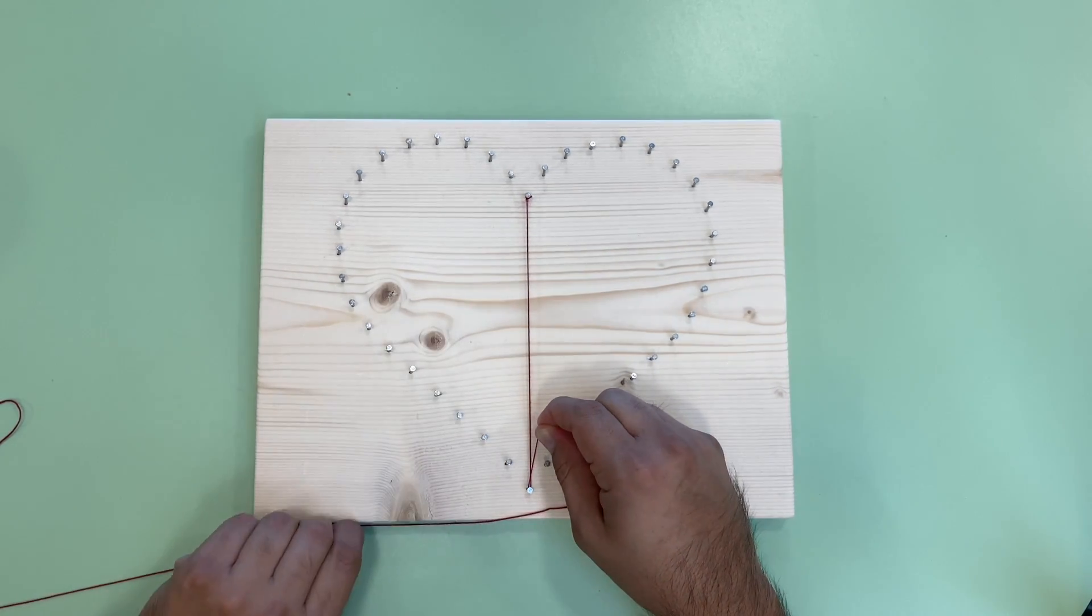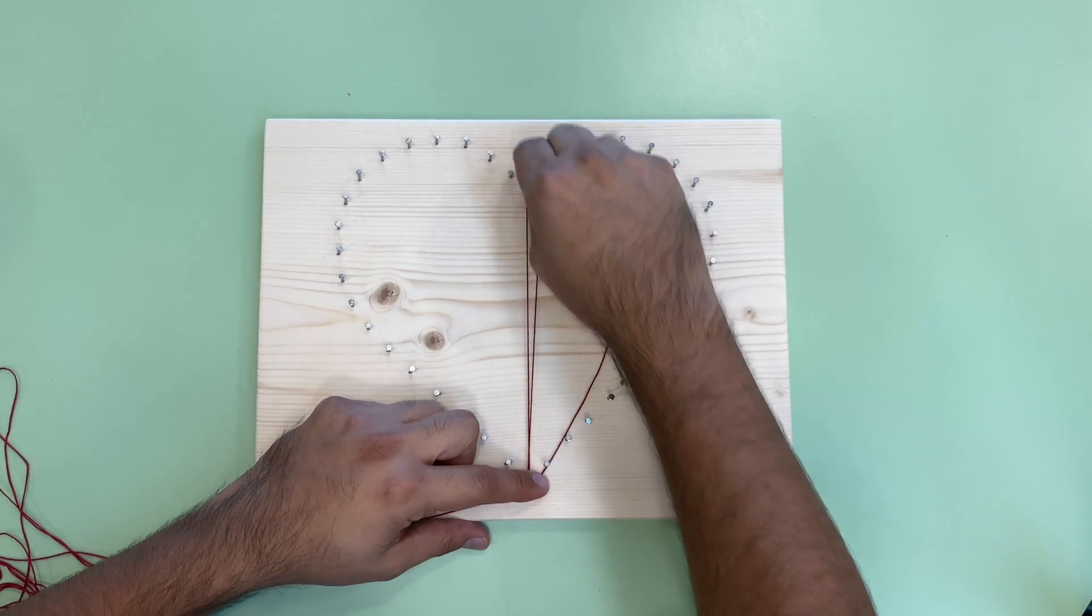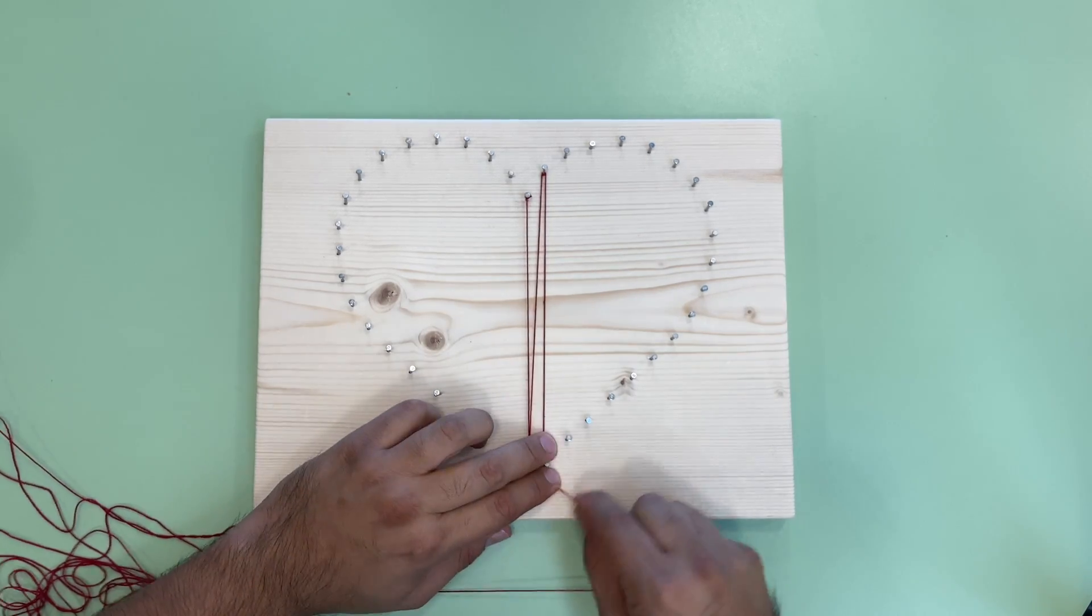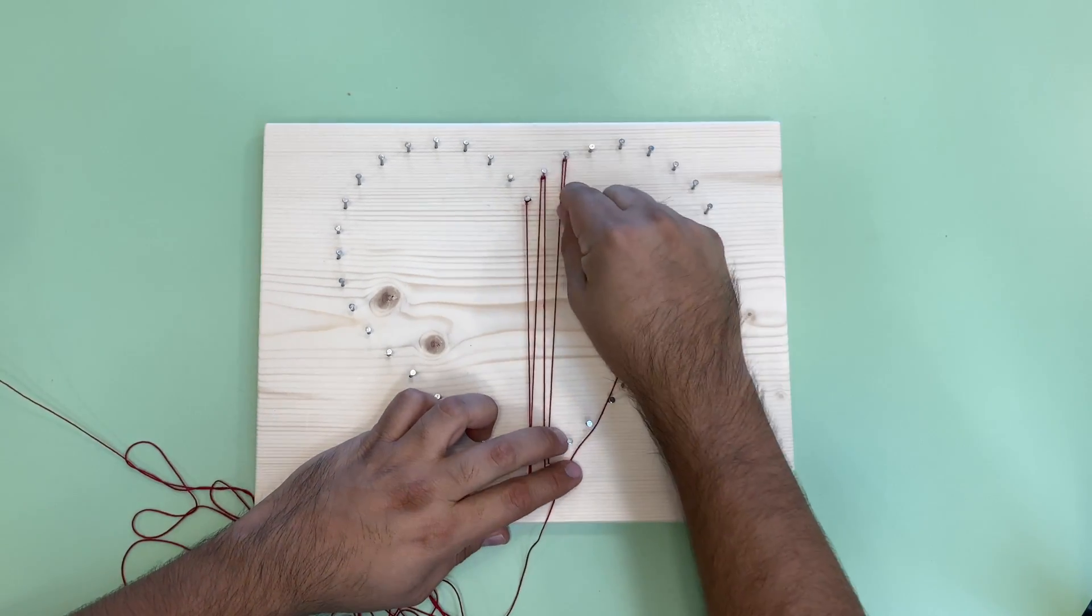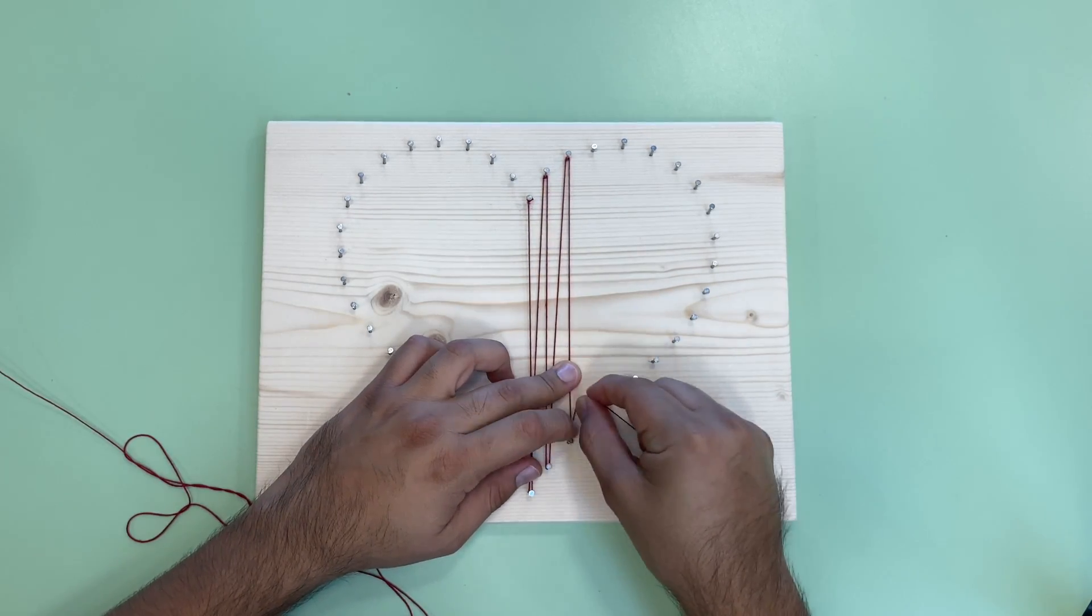You can start by doing the outline of the shape or you can do what I'm doing here, filling the inside of the shape first. Make sure to loop the yarn around each of the nails. You can fill the inside of the shape using patterns or you can do it randomly.